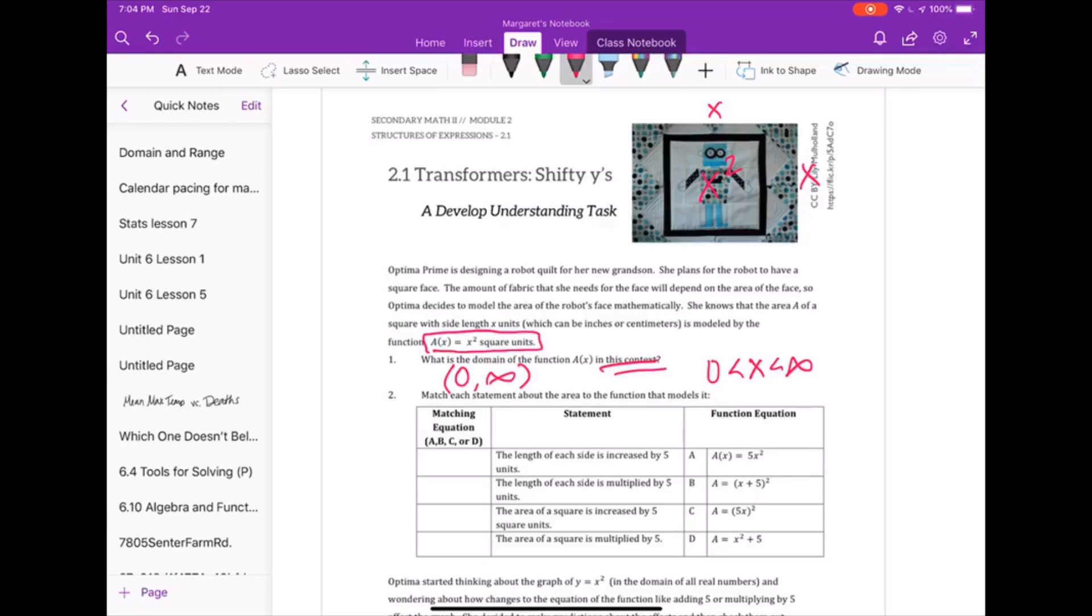In number two, we are thinking about how we might represent these situations with symbols. So let's look at this basic square, drawing the square, where the side lengths were x. And in the first statement, it says the length of each side is increased by 5 units. So we are adding 5 to each side. If we want the area of that, then we need to multiply the sides by each other, which would give us x plus 5 times x plus 5.